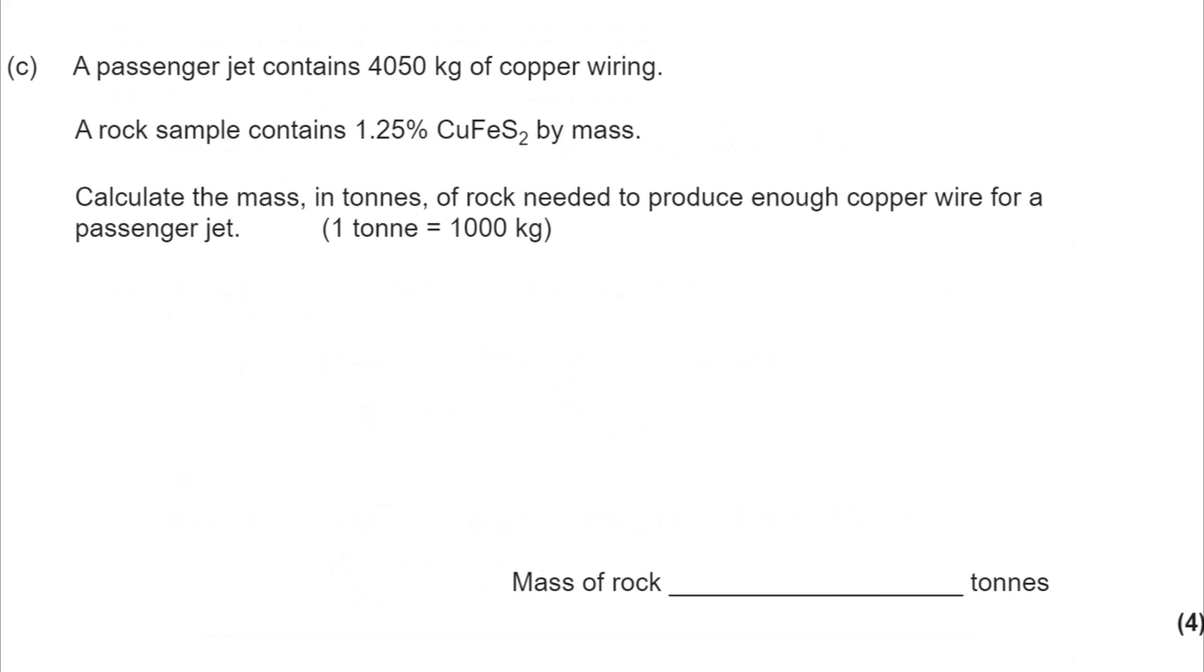Moving on to part C, and we have a calculation here. Quite a lot of steps to go through, not difficult maths, but fiddly to go through step by step. We have a mass of copper, so we can always find its MR. I'm remembering to convert my kilograms into grams, multiplying by a thousand. That tells me I've got 63,780 moles.